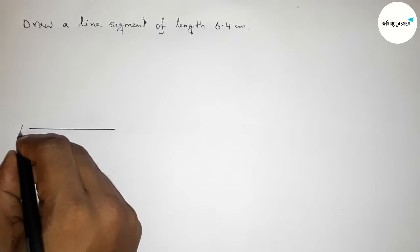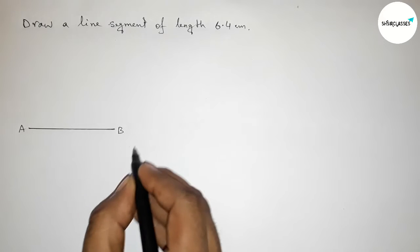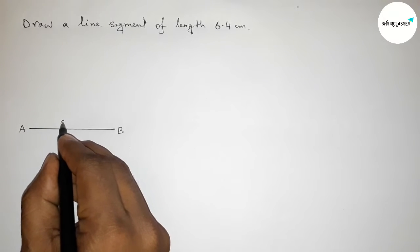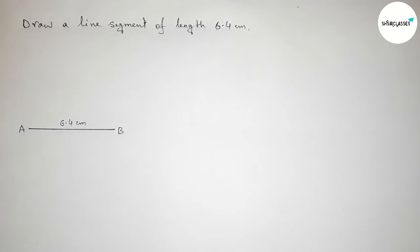Now taking point A here and point B here, so AB is a line segment of length 6.4 centimeters.